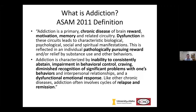The 2011 ASAM definition is wordier but explains more. It describes addiction as a primary chronic disease of brain reward, motivation, memory, and related circuitry. Dysfunction in these circuits leads to characteristic manifestations in all aspects of life, reflected in pathological pursuit of reward and relief from substances. It is characterized by inability to abstain, impaired behavioral control, cravings, diminished recognition of significant problems, and dysfunctional emotional responses. Like other chronic diseases, addiction often involves cycles of relapse and remission.